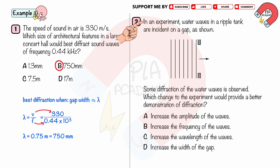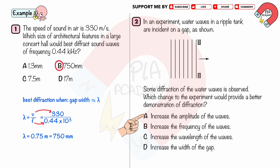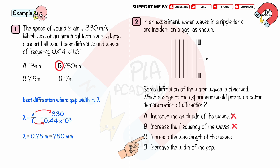In an experiment, water waves in a ripple tank are incident on a gap and some diffraction is observed. Which change would provide a better demonstration of diffraction? The best diffraction occurs when the gap size is comparable to the wavelength. Choice A, increase the amplitude — incorrect, amplitude does not affect diffraction. Choice B, increase the frequency — incorrect, increasing frequency decreases wavelength, reducing diffraction. Choice C, increase the wavelength — correct, making the wavelength closer to the gap size leads to more diffraction. Choice D, increase the width of the gap — incorrect, increasing gap width decreases diffraction.